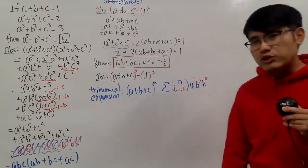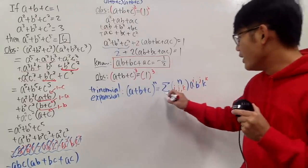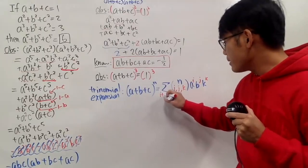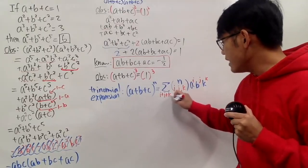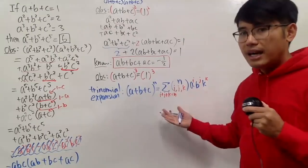And what's the connection between i, j, k? Well, the connection is that i plus j plus k, they have to add to be n.